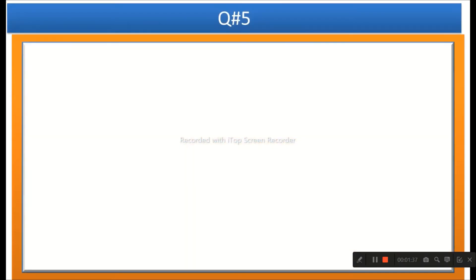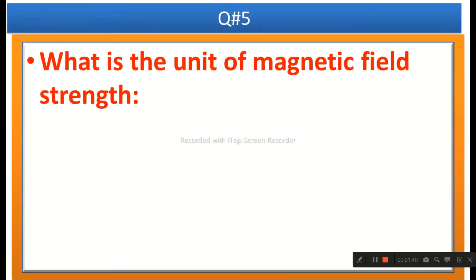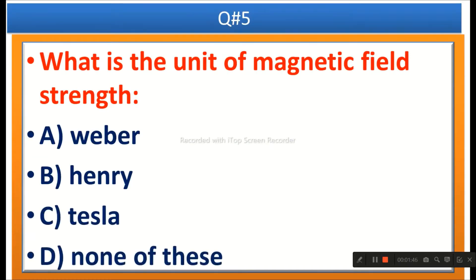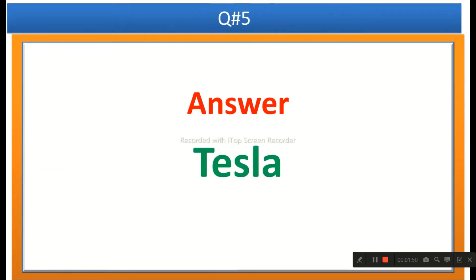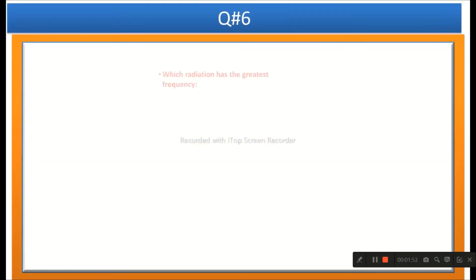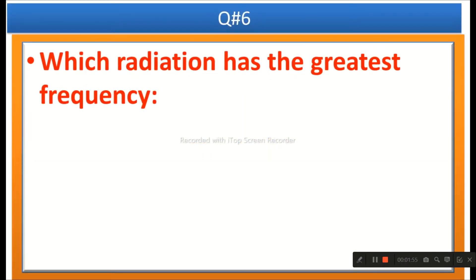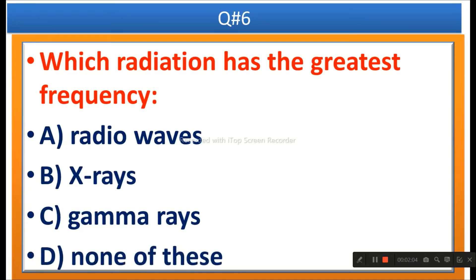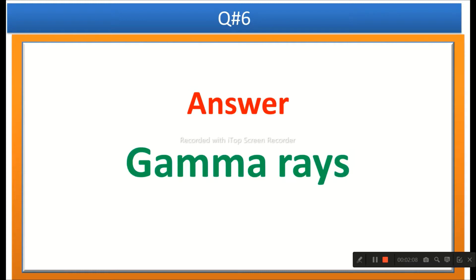The next question: What is the unit of magnetic field strength? Options are Weber, Henry, Tesla, or none of these. The right answer is Tesla. The next question: Which radiation has the greatest frequency? Options are radio waves, X-rays, gamma rays, or none of these. The right answer is gamma rays.